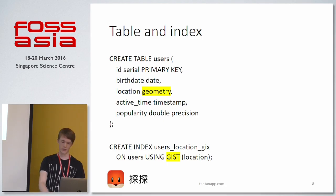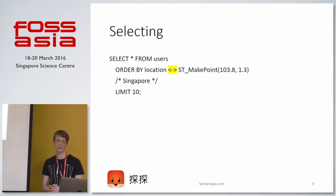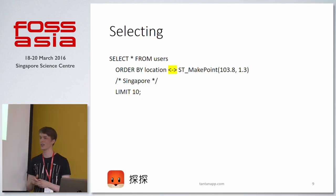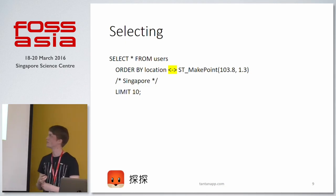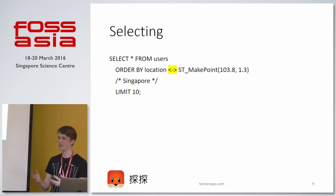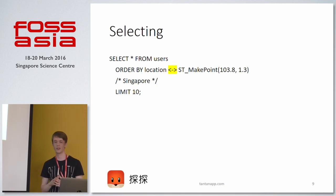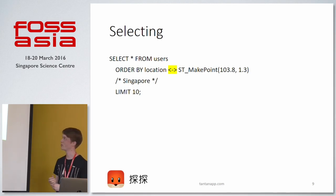Selecting from this table looks like this: we select from users and order by how far away they are from us — since we are in Singapore I use the x and y of Singapore — with a LIMIT of 10 to take the 10 closest users. By using this operator, this query runs very fast — in less than one millisecond for my million test users.